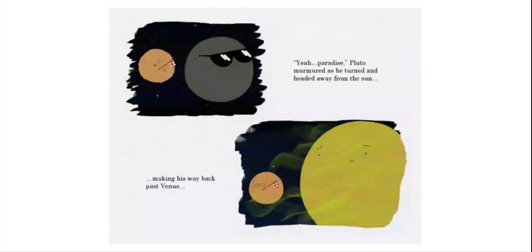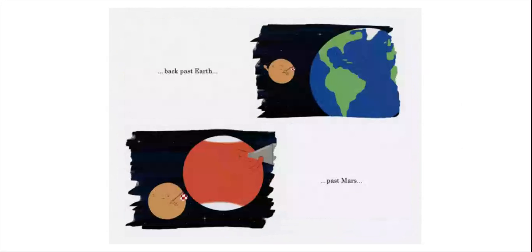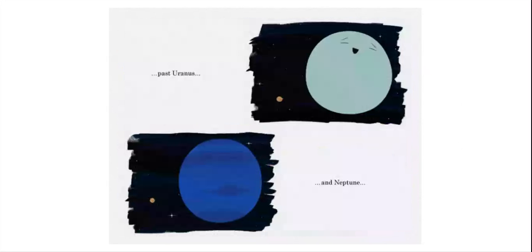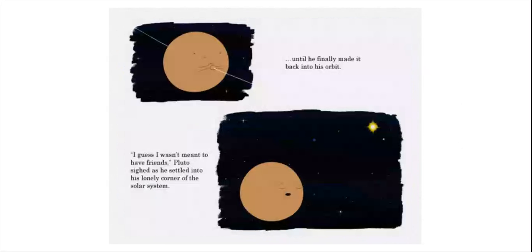Making his way past Venus, back past Earth, past Mars, past Jupiter, past Saturn, past Uranus, and Neptune, until he finally made it back into his orbit. I guess I wasn't meant to have friends, Pluto sighed as he settled into his lonely corner of the solar system.